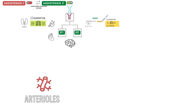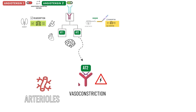Next, we are looking at the effects of angiotensin 2 on systemic arterioles. Here, angiotensin 2 binds to G-protein-coupled receptors on blood vessels, leading to a secondary messenger cascade that results in potent arteriolar vasoconstriction. This acts to increase total peripheral resistance, causing an increase in blood pressure.